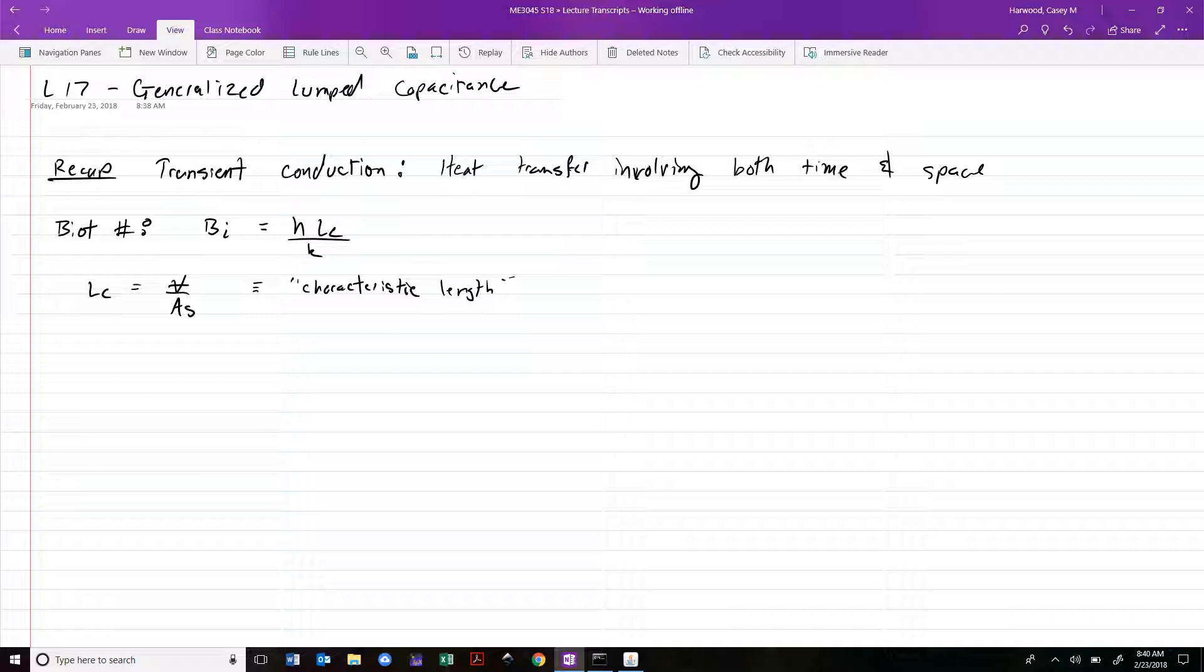It's some representation of the mean length of an object. If it's irregularly sized, LC is representative of taking that object and squishing it into a cube - LC would be the length of one side. It gives you a general idea of how big something is in linear dimensions. As a rule, if BI is less than about 0.1, we can use this magical thing called lumped capacitance analysis.